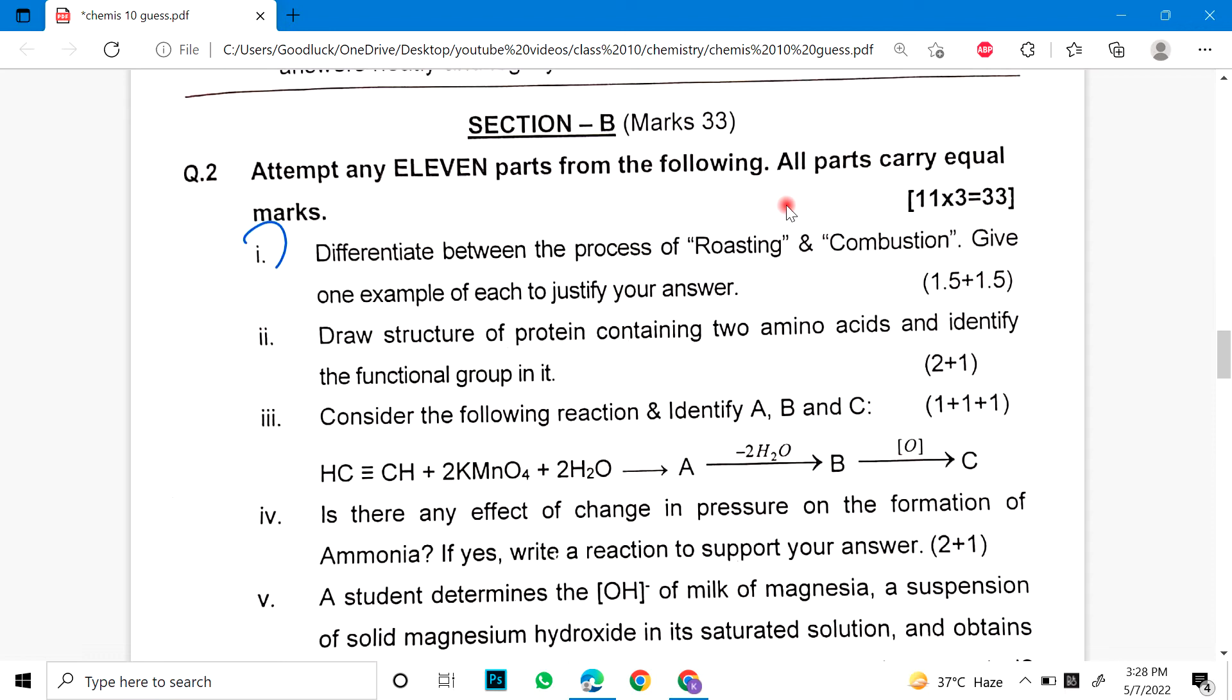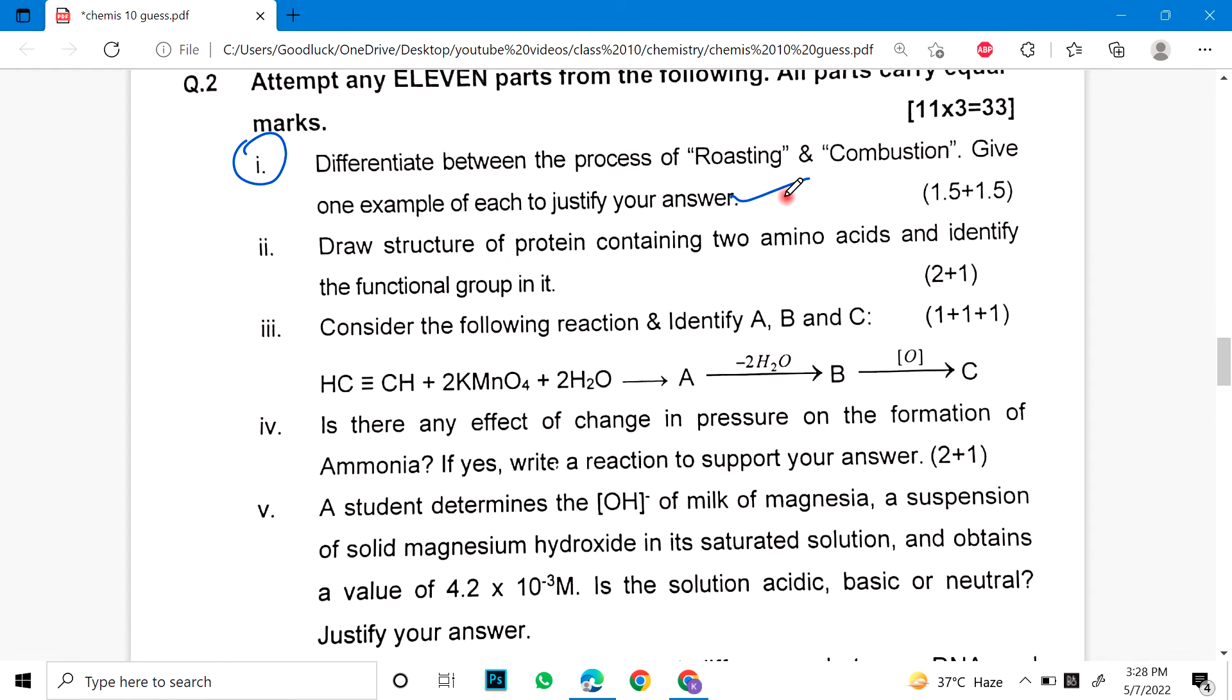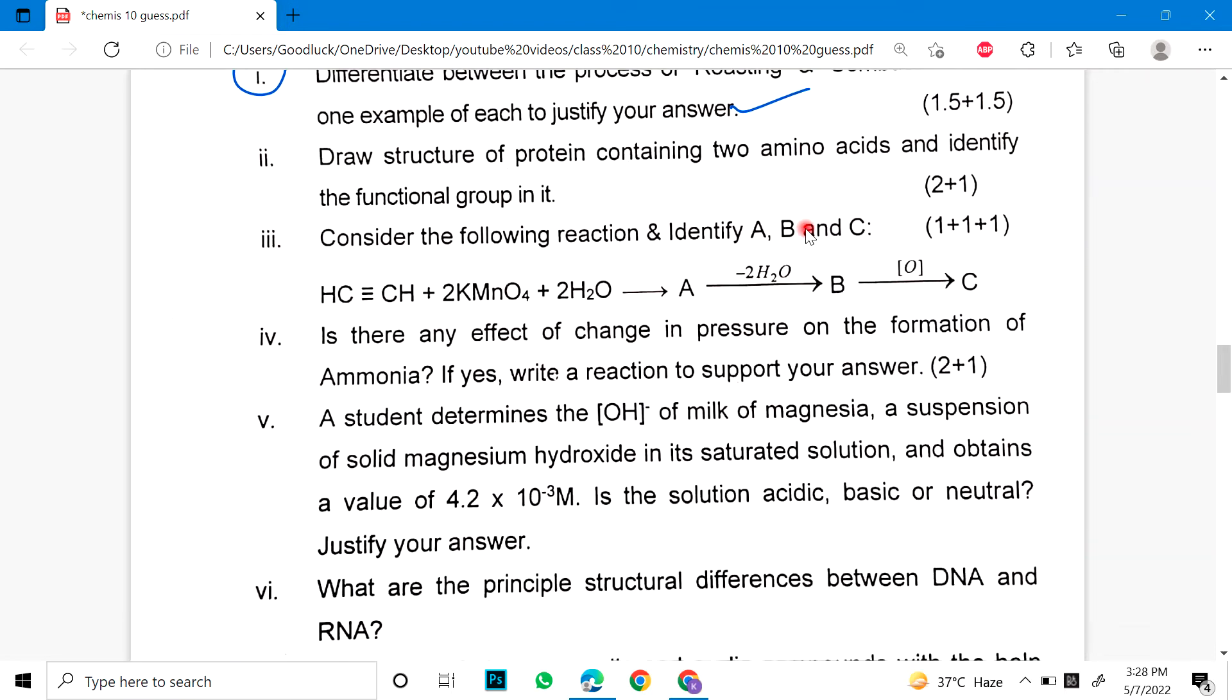Number 2. Question 2. Part 1. Can I differentiate between the process of roasting and combustion? Give one example of each to justify your answer. Number 2. Draw a structure of protein containing 2 amino acids and identify the functional group in it. Number 3. Consider the following reaction and identify A, B, C.